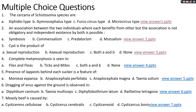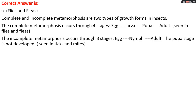Question number four: complete metamorphosis is seen in options A, flies and flea; options B, tick and mite; options C, both A and B; options D, none. The right answer is option A, flies and flea. There are two types of metamorphosis: complete and incomplete. Complete metamorphosis occurs in four stages — egg, larva, pupa, adult — seen in flies and flea. Incomplete metamorphosis occurs in three stages — egg, nymph, adult — the pupa stage is absent, as seen in ticks and mites.